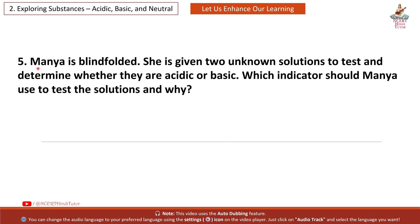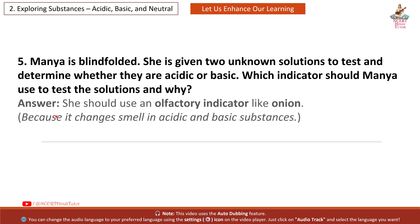Question 5: Mania is blindfolded. She is given two unknown solutions to test and determine whether they are acidic or basic. Which indicator should Mania use to test the solutions and why? Answer: She should use an olfactory indicator like onion, because it changes smell in acidic and basic substances.